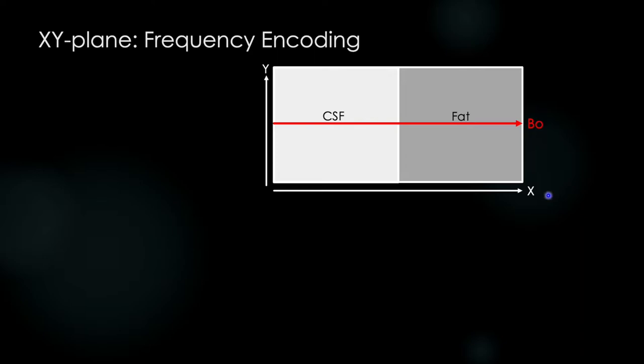The magnetic field these two voxels will experience is B0, or if the slice select gradient is on, B0 plus or minus the applied gradient field. Either way, it will be constant across the slice. We've done nothing to change the magnetic field in the x or y dimension so far.